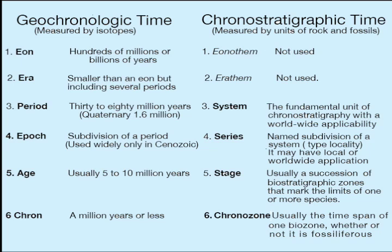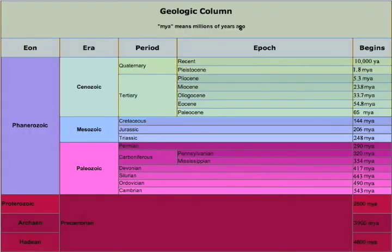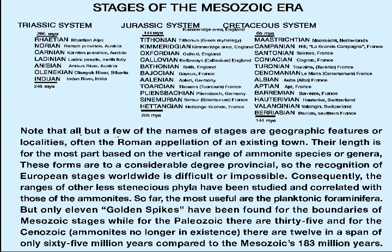Stage, series, and system establish a time scale independent of, but correlatable with, the more accurate measurements of geochronologic time. Here is a list of the names of the stages of the Mesozoic era, together with an indication of their source — usually a geographic location — that was the site of the sequence in which the stage was defined. But many of these sites are now replaced by reference to a locality with a more complete representation of the defining characteristics of the stage.